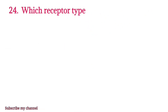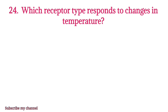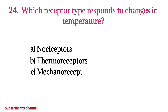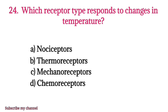MCQ number twenty-four: Which receptor type responds to changes in temperature? Option A: nociceptors, option B: thermoreceptors, option C: mechanoreceptors, option D: chemoreceptors. The right option is option B.